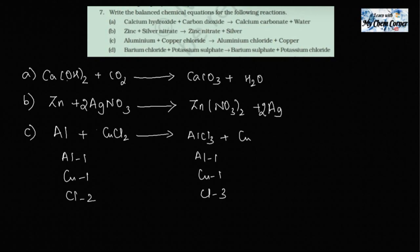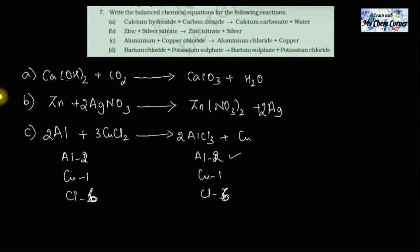To fix chlorine, I put 3 in front of CuCl₂ and 2 in front of AlCl₃ — three times two gives six, and two times three gives six — so chlorine is balanced. But now Al on the left is 1 and on the right is 2, so I put 2 in front of Al on the left, and aluminium is balanced.